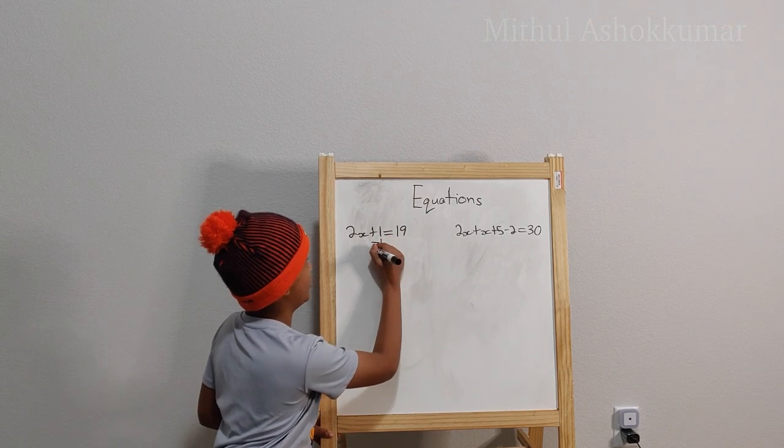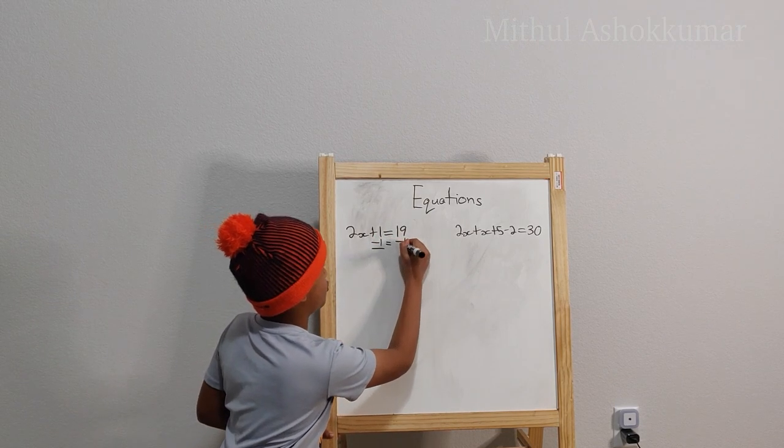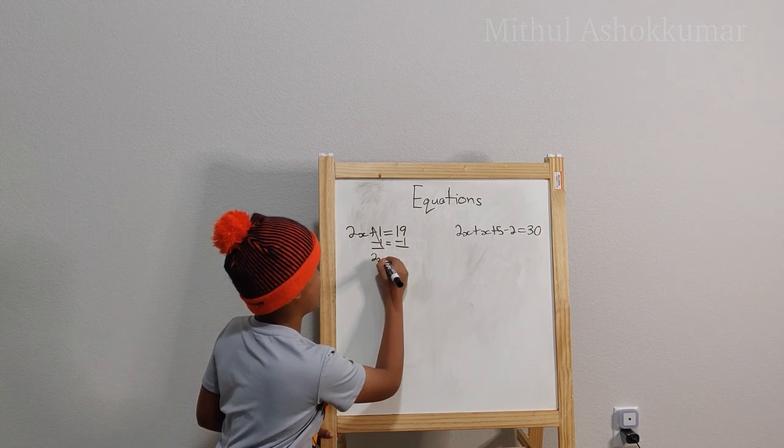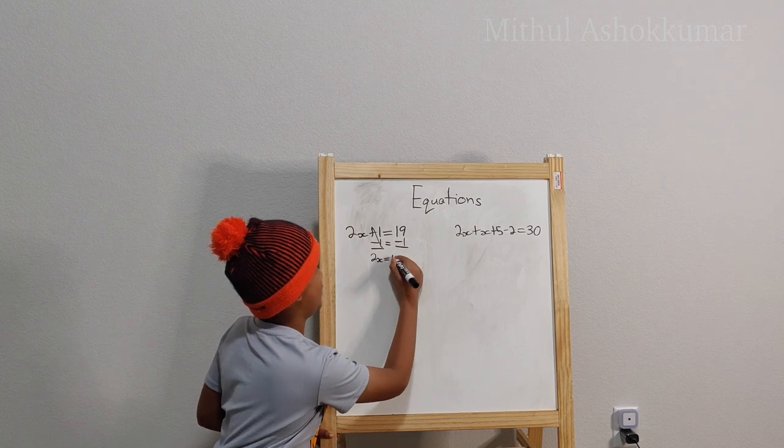So we will just subtract 1 minus 1. So this cancels out. So then on this side you will have 2x and on the other side you have 18.